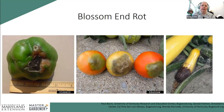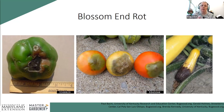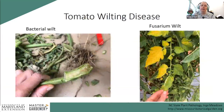Blossom end rot is something you see in a lot of solanaceous crops — commonly on your first round of tomatoes, and also on squash and peppers. It's a nutrient disorder where your fruit is enlarging faster than the plant can deliver calcium into it. Sometimes it's from a lack of calcium in the soil, sometimes too much or too little water, sometimes a pH issue. Often if you harvest that first round of affected tomatoes, the next round will come out perfectly clean.